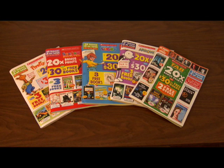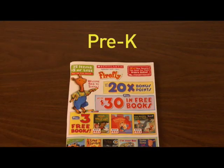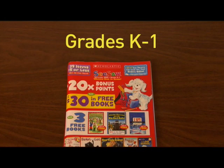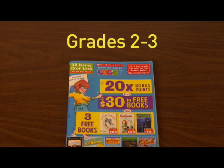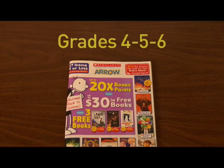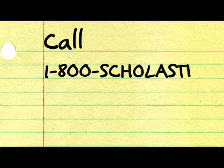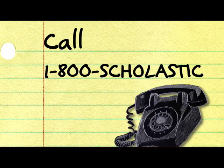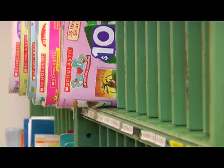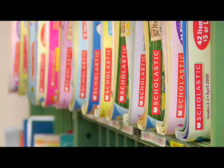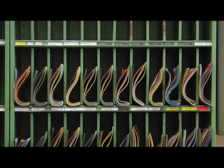First, you'll need a Scholastic Book Clubs catalog. There are a number of different catalogs, and we'll set you up with the ones that are age and grade appropriate for you. Ask the school secretary if there are any extras in the office. If not, just call 1-800-SCHOLASTIC and request a catalog. Your catalog will arrive in your school mailbox in a few days.